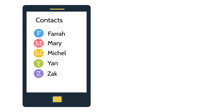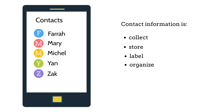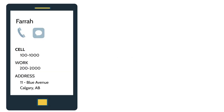You use databases all the time. For example, your cell phone contacts are in a database, where you collect, store, label, and organize database information yourself. Let's see how it works. We'll start by using Farrah's information as an example. Here's Farrah's contact page, which is based on information that you entered into your cell phone. Behind the scenes in your phone, there's a contacts database.